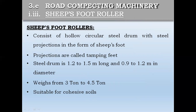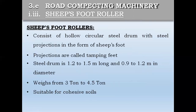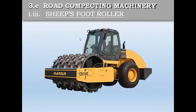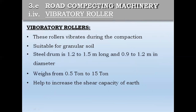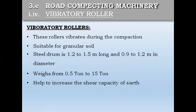The sheepsfoot roller consists of a hollow circular steel drum with steel projections in the form of sheeps' feet. This type of roller is suitable for compacting cohesive type soil such as clay. The weight of this roller is 3 to 4.5 tons. Vibratory rollers vibrate during compaction and are suitable for granular soil. This type of roller helps to increase the shear capacity of earth.